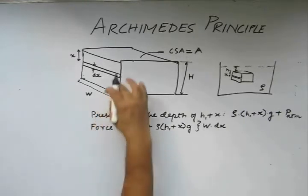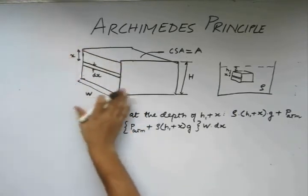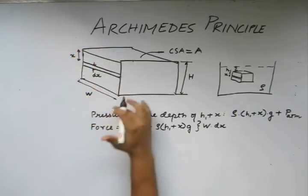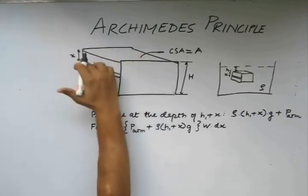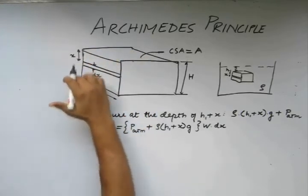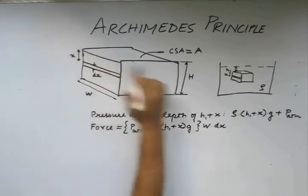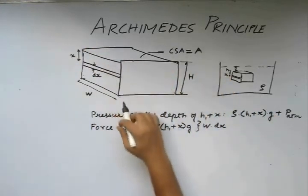For us to find out the net force acting on the entire surface, we have to integrate it by this height. We have to integrate this over this height H, capital H of this body.